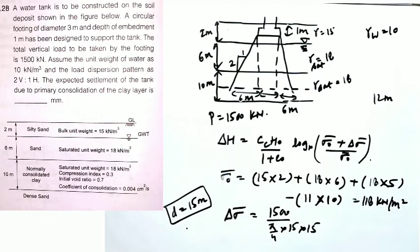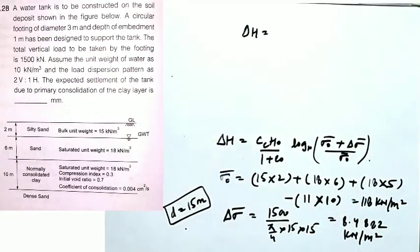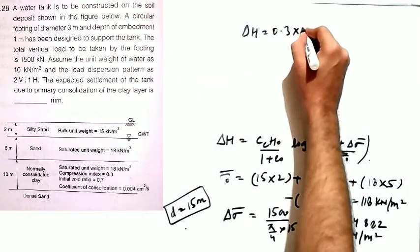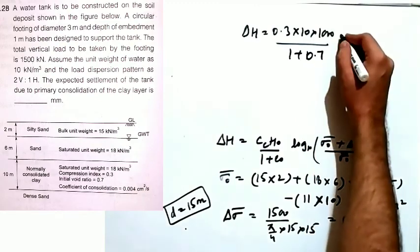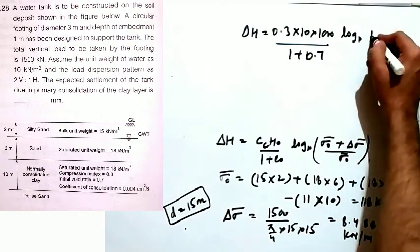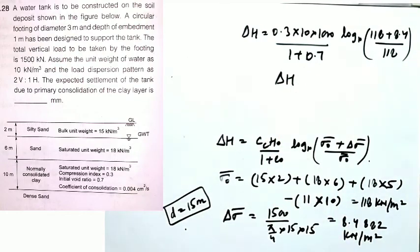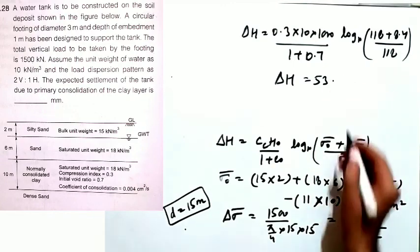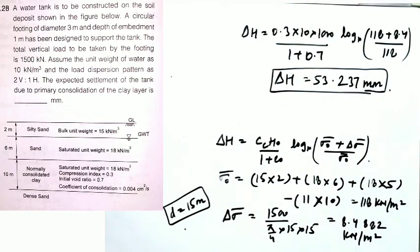Now substituting all parameters: Δh equals 0.3 × 10 × 1000 mm / (1 + 0.7) × log₁₀((118 + 8.4) / 118). Solving this gives Δh equals 53.237 millimeters. This is the expected settlement of the tank foundation. I hope you understood this question. Practice many more such questions; we will also cover them in the chapter on foundations. This is all about consolidation — thank you.